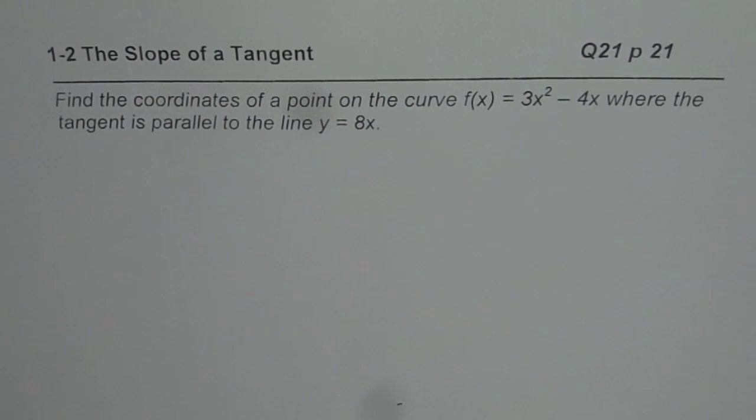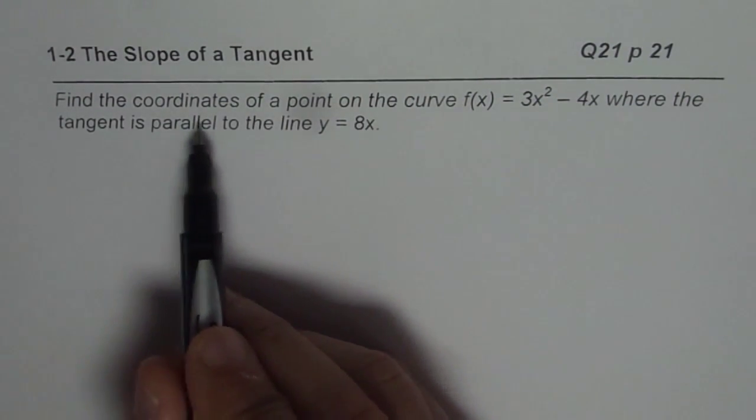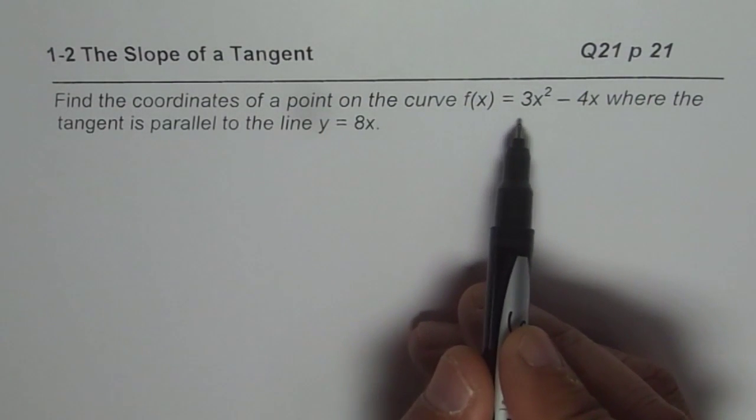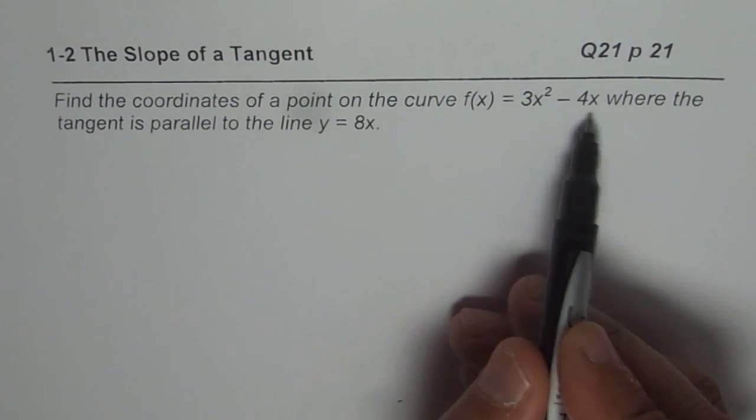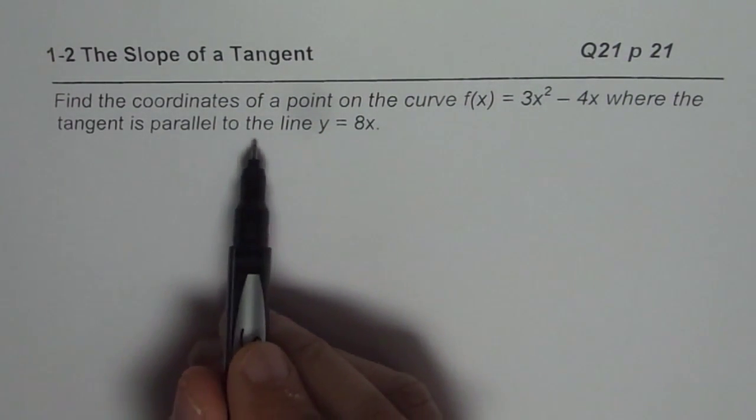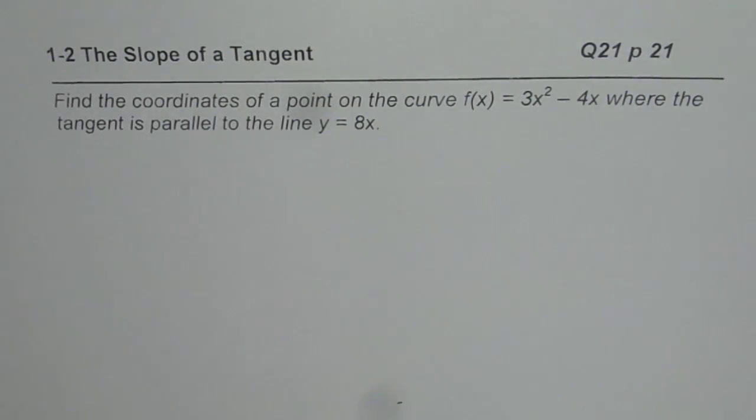I am Anil Kumar and as requested by some of my students, I am sharing with you solution of question number 21, page 21, on slope of tangents, calculus. Question here is, find the coordinates of a point on the curve f(x) = 3x² - 4x where the tangent is parallel to the line y = 8x.